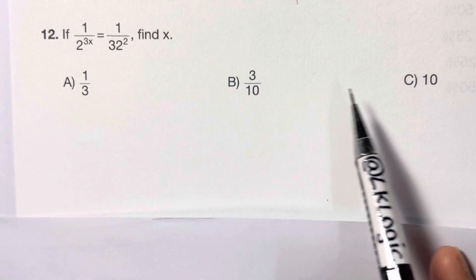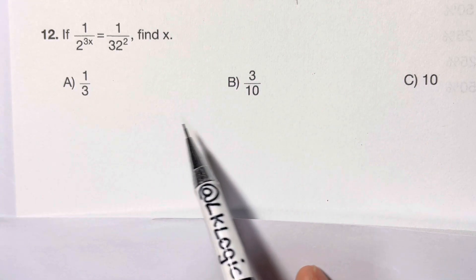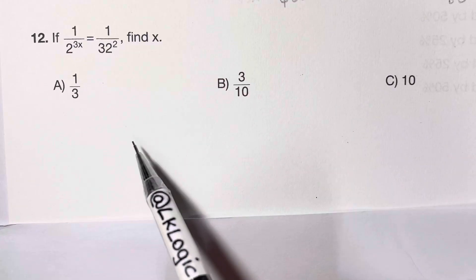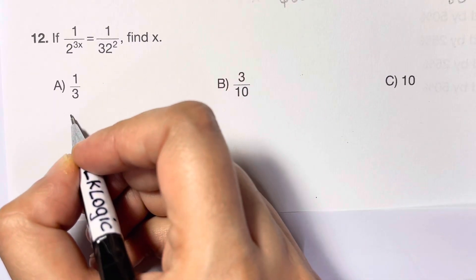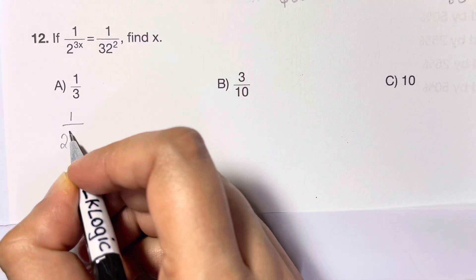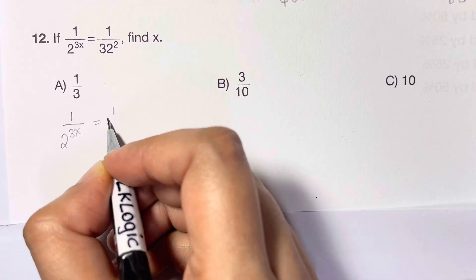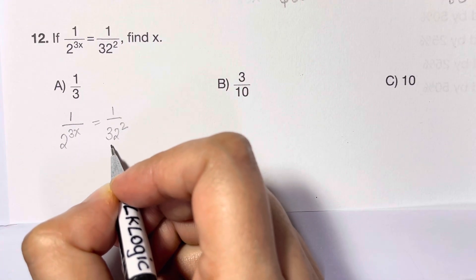Hi everyone, let's solve this Math Olympiad question. This is the easiest question ever. The question says 1 over 2 to the power of 3x equals 1 over 32 to the power of 2, and you have to find x.